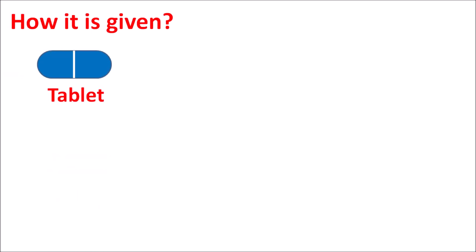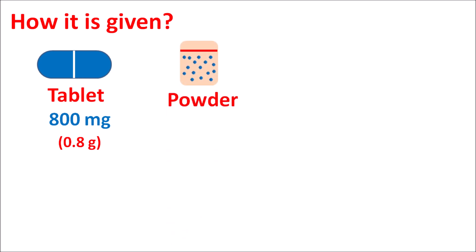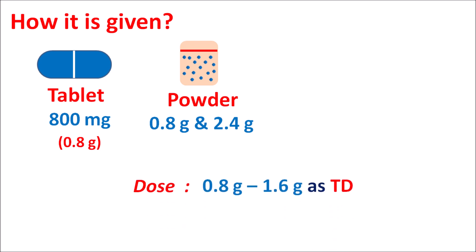Sevelamer is available as an 800 mg tablet (0.8 g) and also as a powder for suspension at strengths of 0.8 g and 2.4 g. The initial dose is individualized, ranging from 0.8 to 1.6 g given three times daily. In patients with phosphate levels greater than 7.5 mg/dL, the dose is 1.6 g; in those with phosphate levels around 5.5 mg/dL, the dose is 0.8 g. The dose can then be titrated based on patient condition and serum phosphate levels.